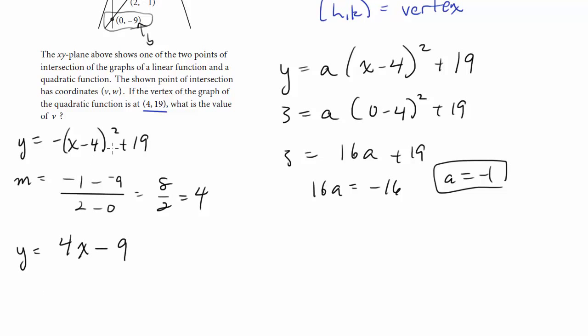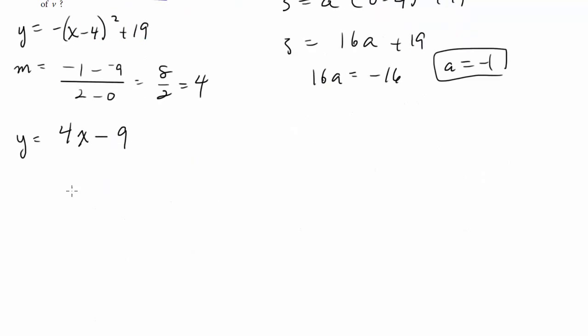So as we said, to find points of intersection with two curves, you set them equal to each other and you solve for x. So now we're going to set negative (x minus 4) squared plus 19 equal to 4x minus 9. And now it's algebra. Let's work this through. Let's FOIL this out. It's x squared minus 8x plus 16 plus 19 equals 4x minus 9.